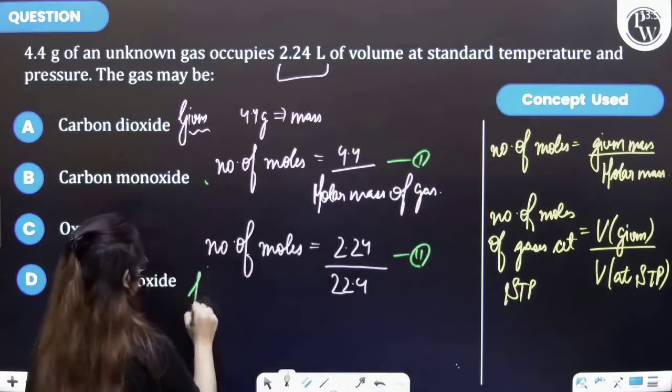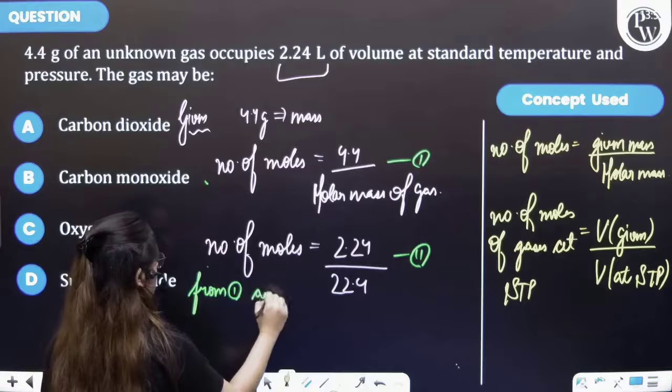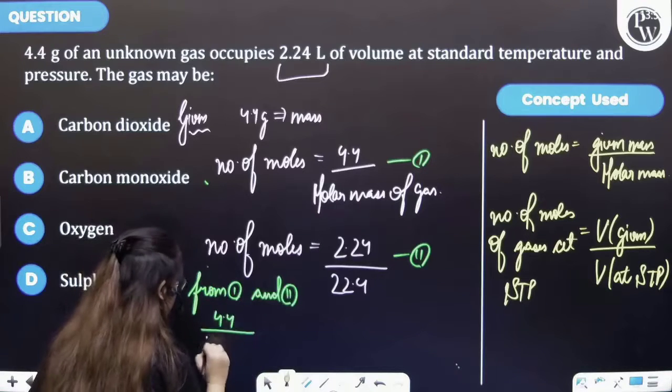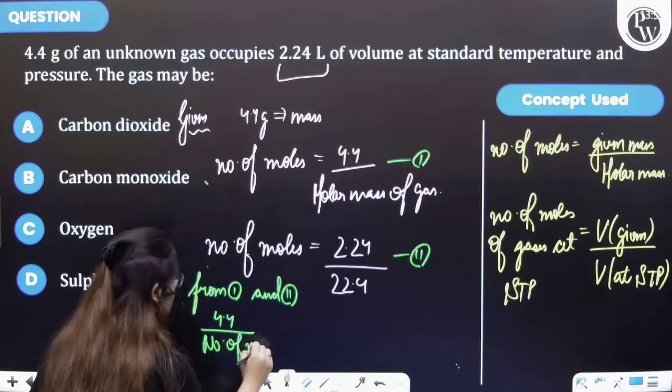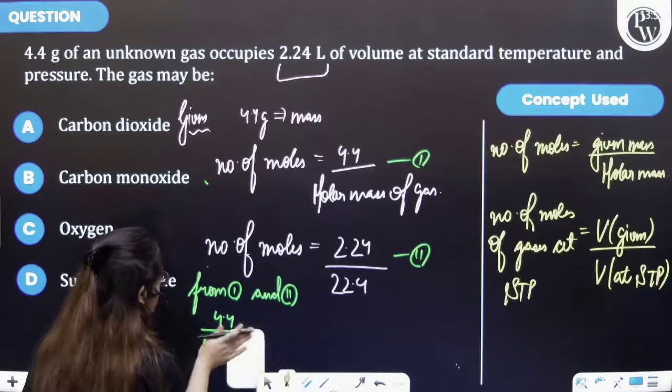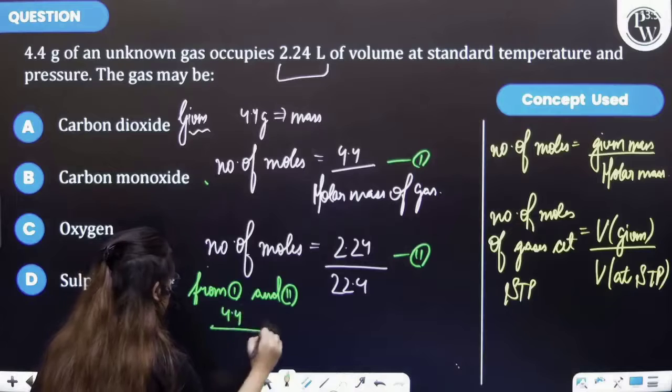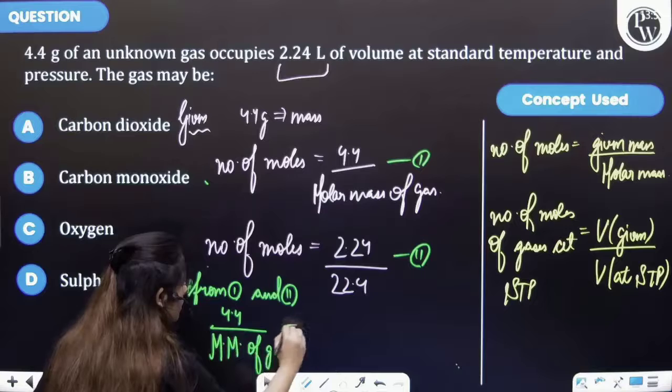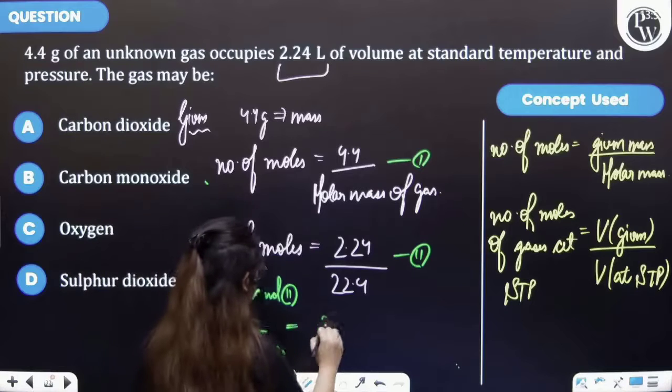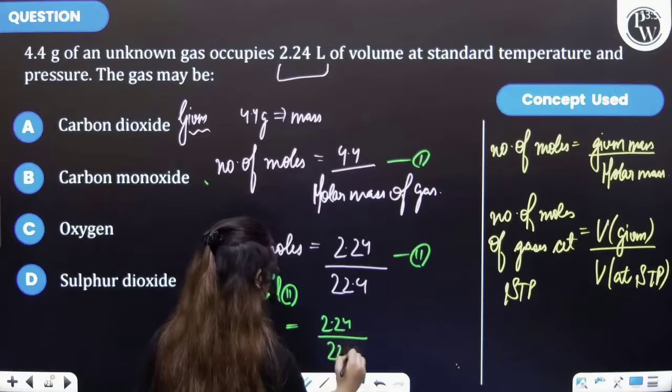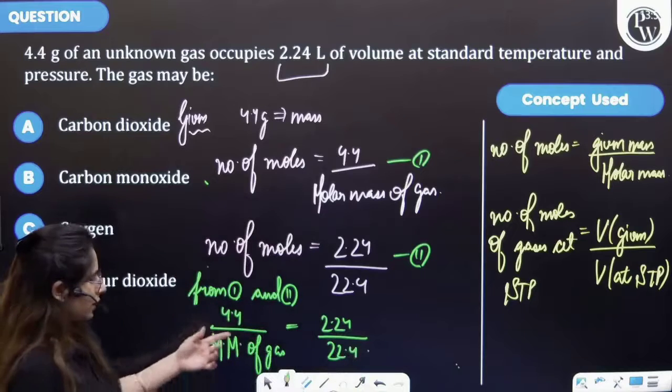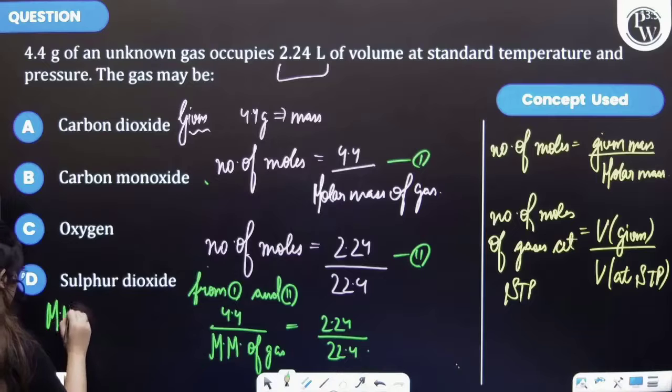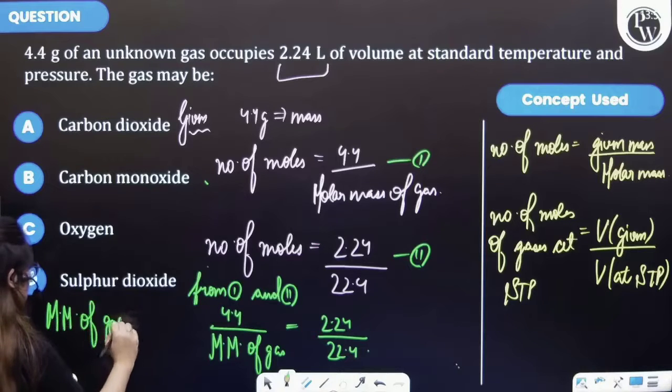So from first and second number of moles, we can equate these equations with molar mass of a gas. And so on calculating you will be getting molar mass of a gas to be 44 grams.